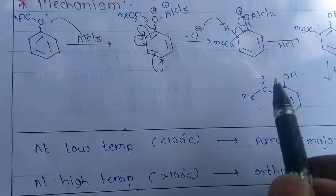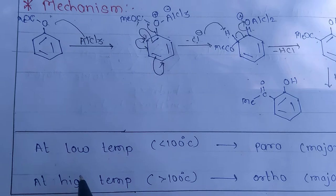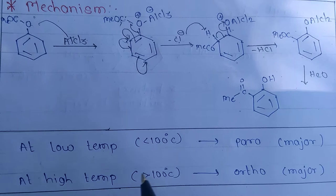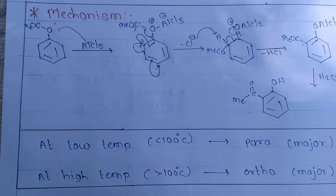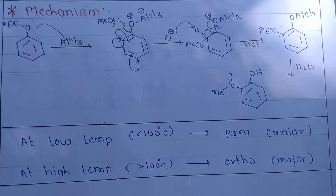Further, the C–OMe attacks the para carbanion and the formation of para-acylphenol takes place. At low temperature — that means when temperature is less than 100 degrees Celsius — the para product is the major product. When temperature is high, that means greater than 100 degrees Celsius, the ortho product is major.